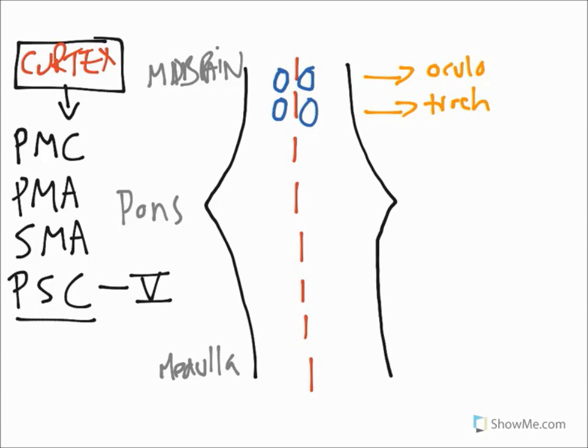Coming down, you might remember the trigeminal nuclear complex. Well, in the middle of that, where the chief sensory nucleus lies, we also have the motor nucleus of trigeminal. So that's going to be in there as well. And next in line we are going to have the abducent nerve.